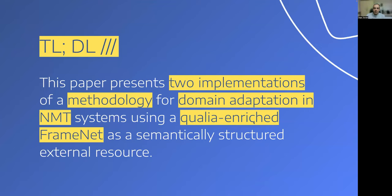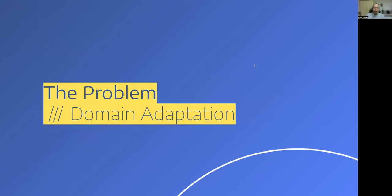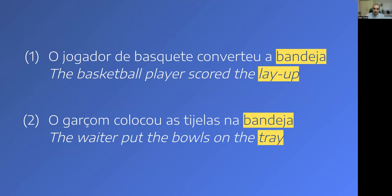In summary, what this paper aims to present are two implementations of a methodology for domain adaptation in neural machine translation systems using a Qualia-enriched FrameNet as a semantically structured external resource. The problem is framed as a problem of domain adaptation, which can be exemplified by two sentences in Brazilian Portuguese with their corresponding translations in English.